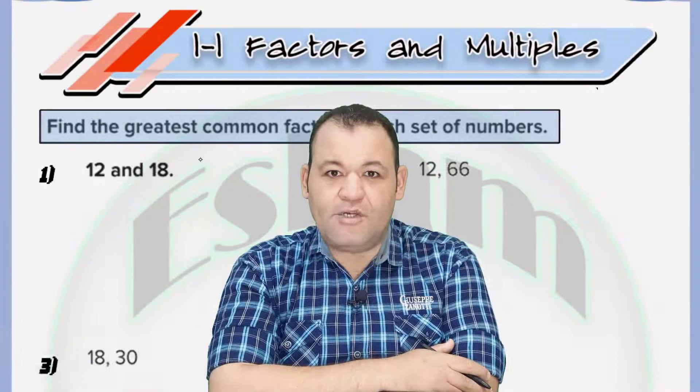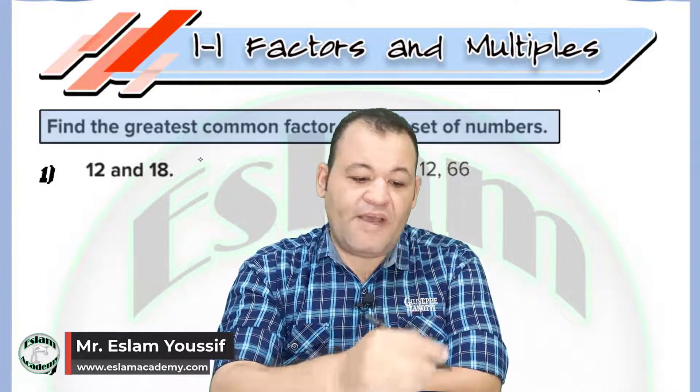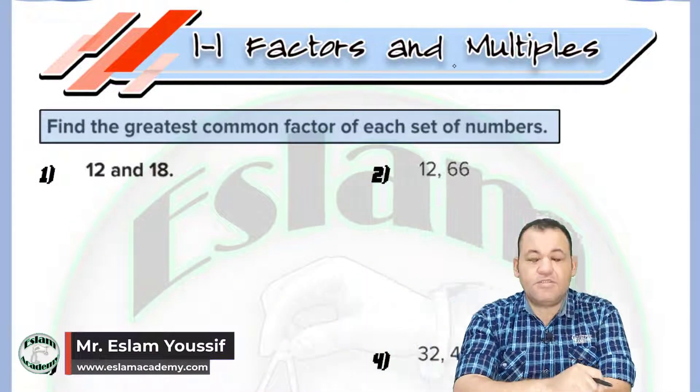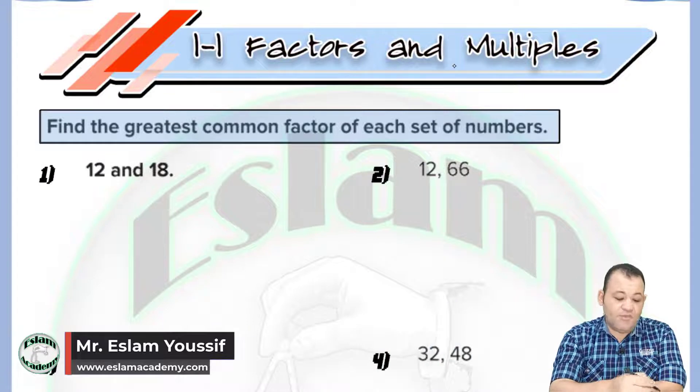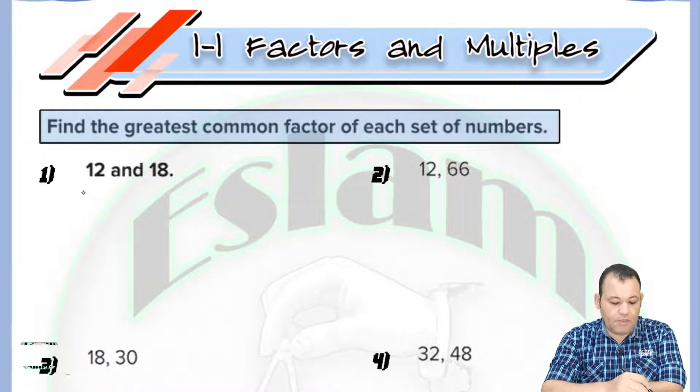Welcome back to the new math tutorial. In this video, we are talking about factors and multiplicity. First, we need to find the greatest common factor of each of the following.